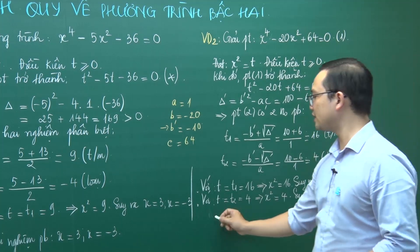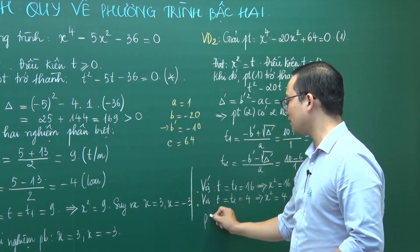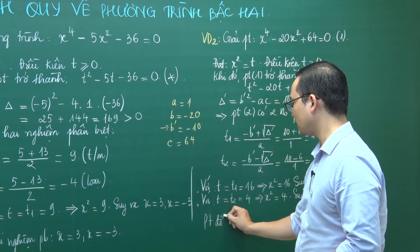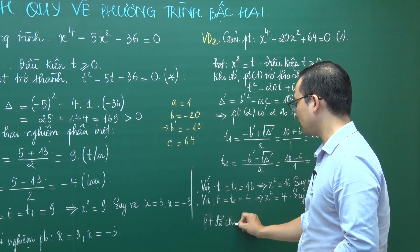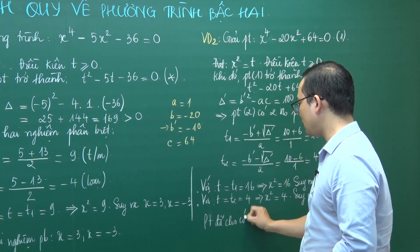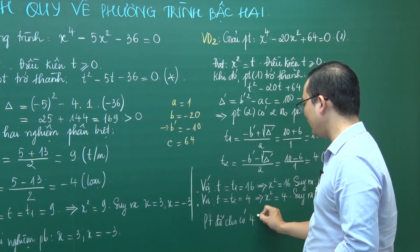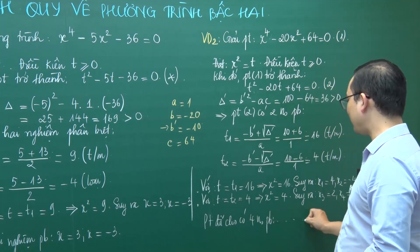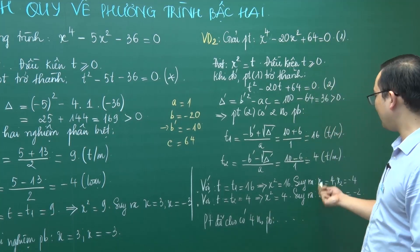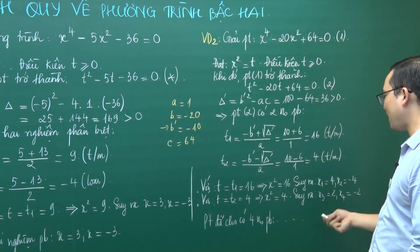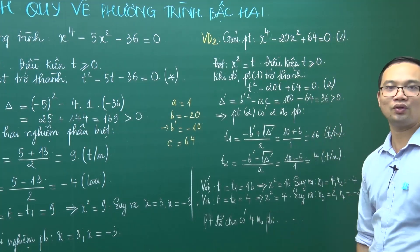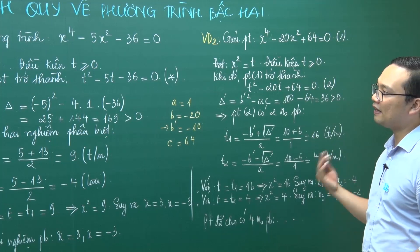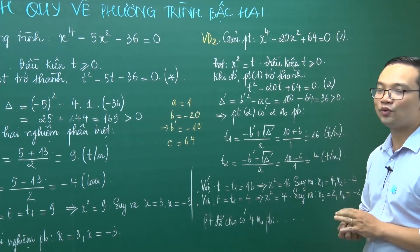Như vậy phương trình đã cho có 4 nghiệm phân biệt: x₁, x₂, x₃, x₄. Đây chính là phần phương trình trùng phương. Giờ chúng ta chuyển sang phần thứ 2.